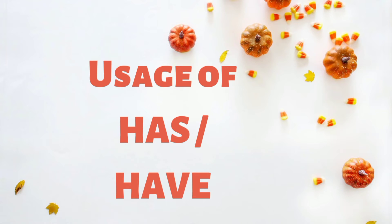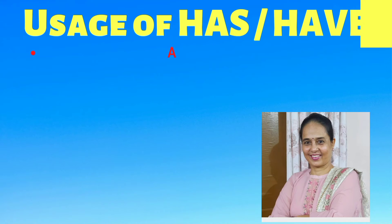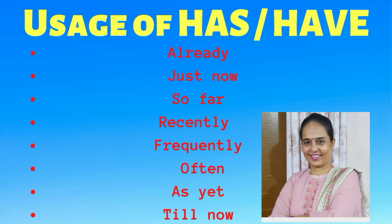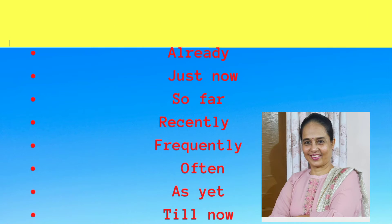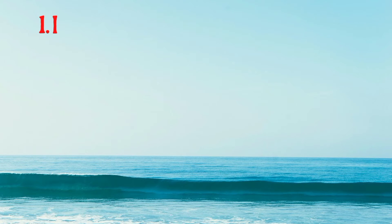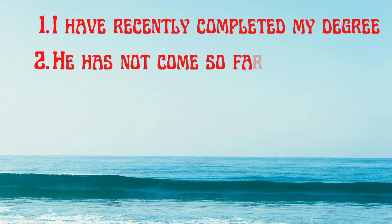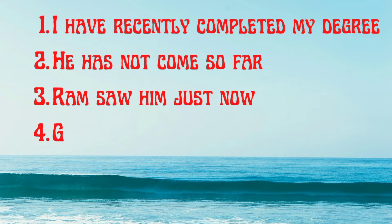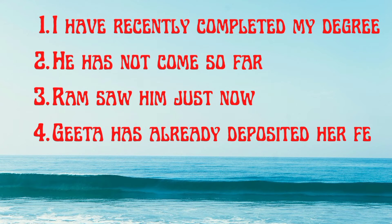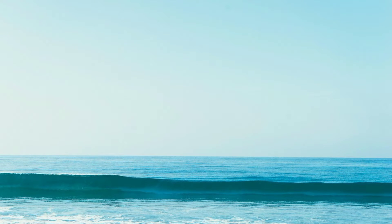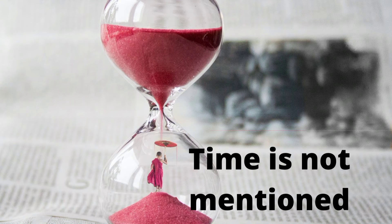The second use of has and have is where words like already, just, now, so far, recently, frequently, often, as yet, and till now are used. For example: 'I have recently completed my degree' — no time is clearly mentioned. 'He has not come so far.' 'Ram saw him just now.' 'Gita has already deposited her fees.' 'He has not reached her home yet.' All these sentences indicate a time which is not clearly mentioned, that is recently or till now.